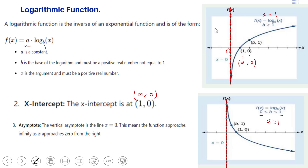For asymptotes: the exponential function has a horizontal asymptote, while the logarithm function has a vertical asymptote. The vertical asymptote is the y-axis, with equation x = 0.